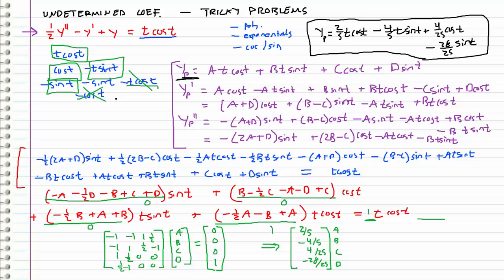In the next video, we'll look at what happens when we do encounter that problem — when a term in our particular solution form is also included in the homogeneous solution. If you ignore that and work through it, basically all the coefficients would cancel out and everything sums to zero, because it's part of the homogeneous solution. That would make it impossible to determine the undetermined coefficients and you'd never get the particular solution. See you next time.